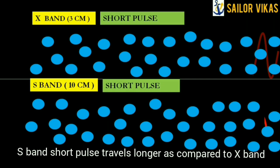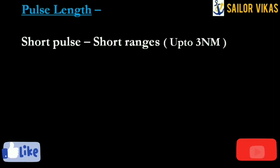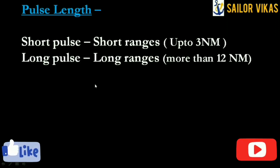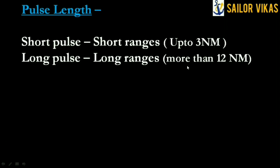Now we will understand the usage — when to use what. Short pulse is normally used for short ranges, up to approximately 3 nautical miles. Long pulse is used for long ranges, approximately more than 12 nautical miles. There is no hard and fast rule about these values, but this is the general usage. Most radars automatically change pulses when you change the range scale, but in some radars the pulse does not change automatically — it depends on the manufacturer.